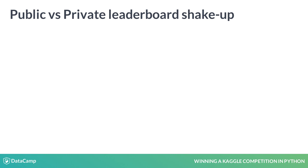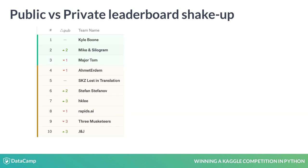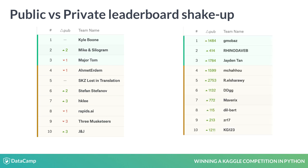The difference between public and private leaderboard standings is called a shake-up. The size of the shake-up is highly different from one competition to another. On the left image, we see a competition example with a small shake-up, where movements in the private leaderboard were about 2-3 places up and down compared to the public leaderboard. The image on the right represents a competition with a huge shake-up, where the winner had only 1485th place on the public leaderboard.